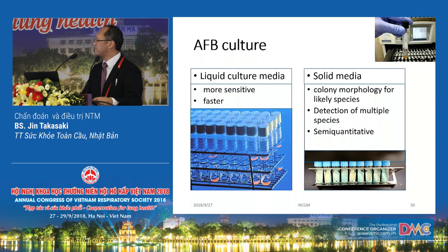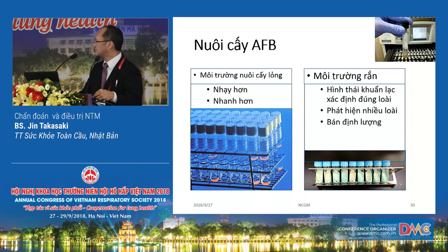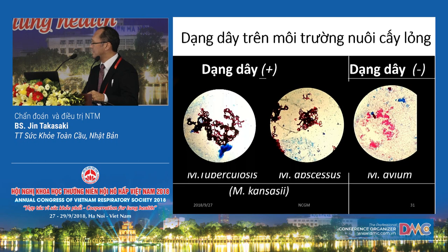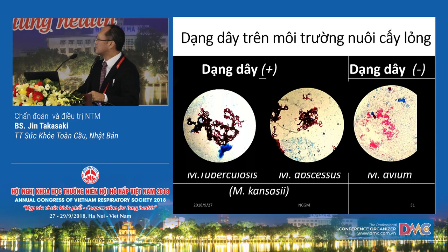This is the AFB culture method. There are two methods: liquid culture and solid culture. In liquid media, when we find AFB, we may see cord formation with TB or mycobacterium abscessus. When we see this cord formation, the pathogen is likely not MAC. Mycobacterium MAC doesn't form this kind of cord. Kansasii also has some cord formation.